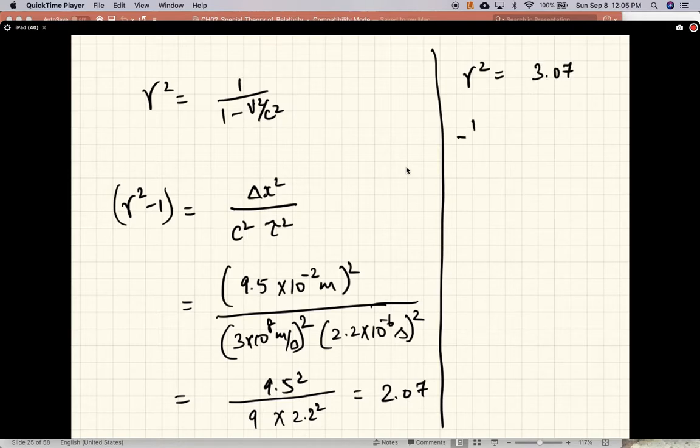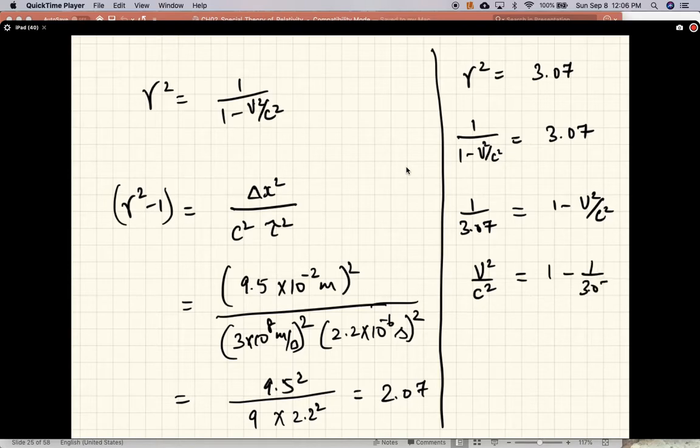And 1 minus v squared by c squared - so 1 over 3.07 equals 1 minus v squared by c squared. And v squared by c squared is 1 minus 1 over 3.07.